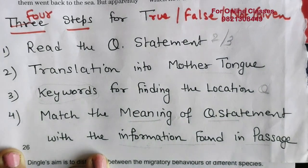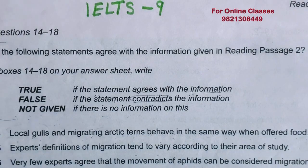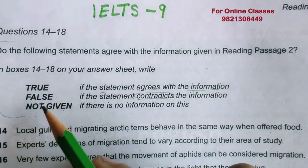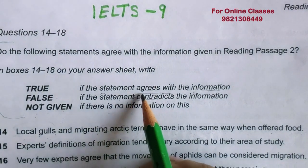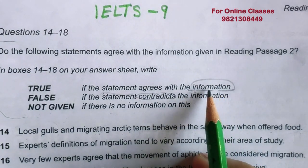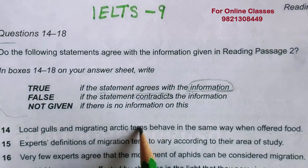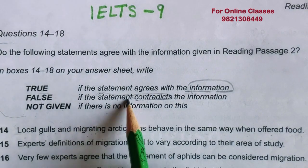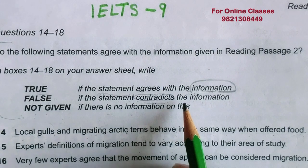Now let's clarify the definitions. When the question statement agrees with the information found in the reading passage, it is TRUE. If the statement contradicts the information — for example, if I say I'm going to school by car, and the passage says a different vehicle — then it is FALSE.